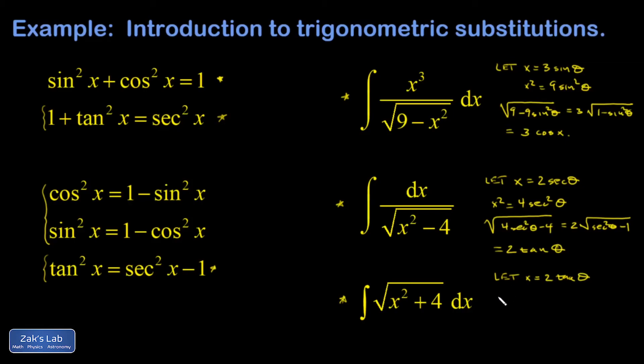And that means my x squared is going to be 4 tangent squared theta. And that means the interior of my square root is 4 tangent squared theta plus 4. I'm going to factor the square root of 4 out, that's a 2, and I end up with tangent squared theta plus 1.